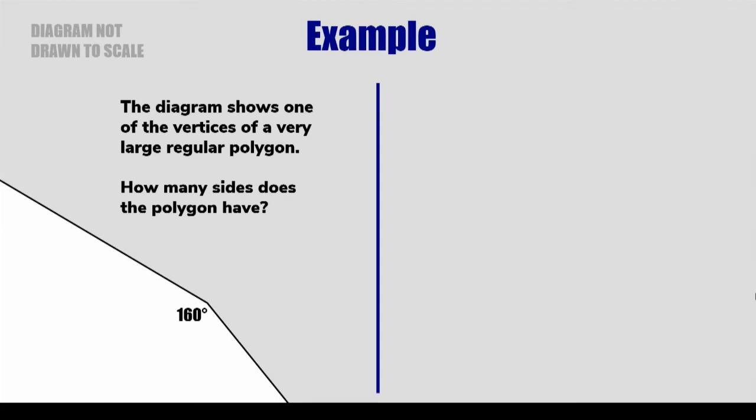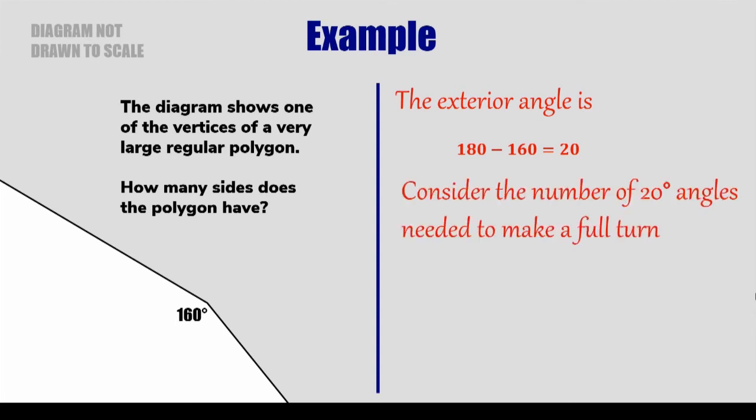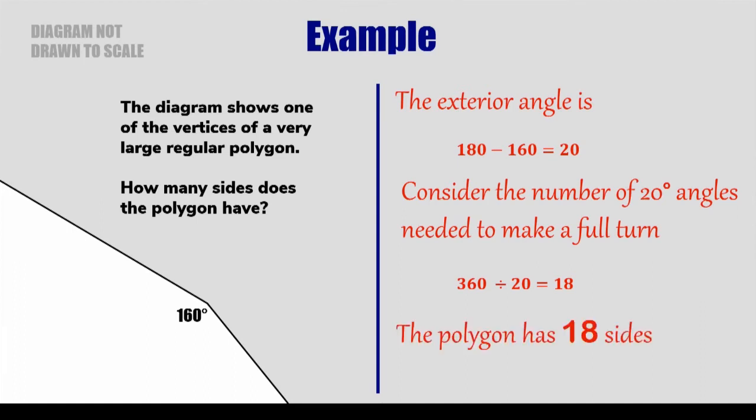The diagram shows one of the vertices of a very large regular polygon. How many sides does the polygon have? Well, that's a very strange question - the diagram won't even fit on the screen. We don't know how many sides the polygon has, but we do know that the interior angles are each 160 degrees. So let's think about the exterior angles. And because the exterior angle lies on a straight line with the interior angle, we could subtract 160 from 180 and get the answer 20. So each exterior angle is 20 degrees. And now let's think how many of those 20 degrees will fit into a full turn, 360 degrees. So 360 divided by 20 is equal to 18. So the polygon must have 18 sides.